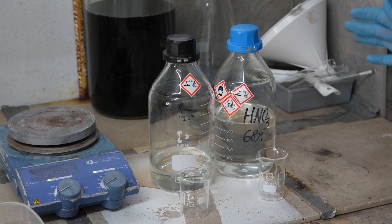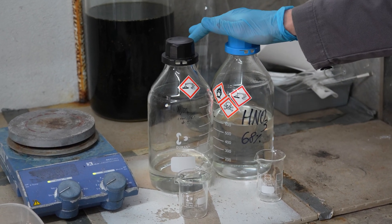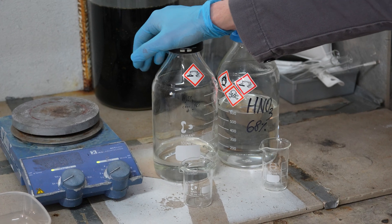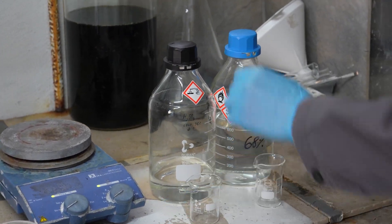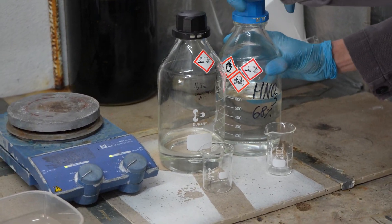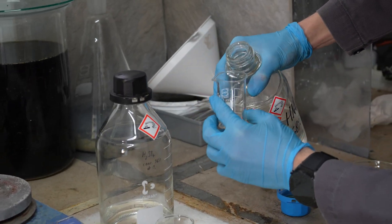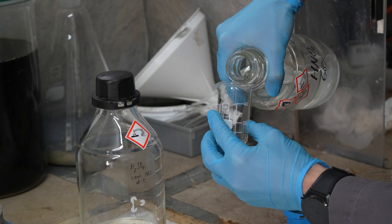So for an effective nitration mixture we're going to need one part nitric acid and two parts concentrated sulfuric acid. So I'll quickly measure them out.